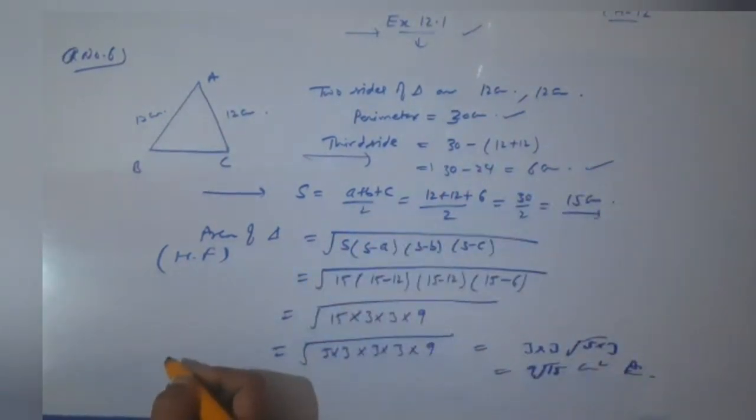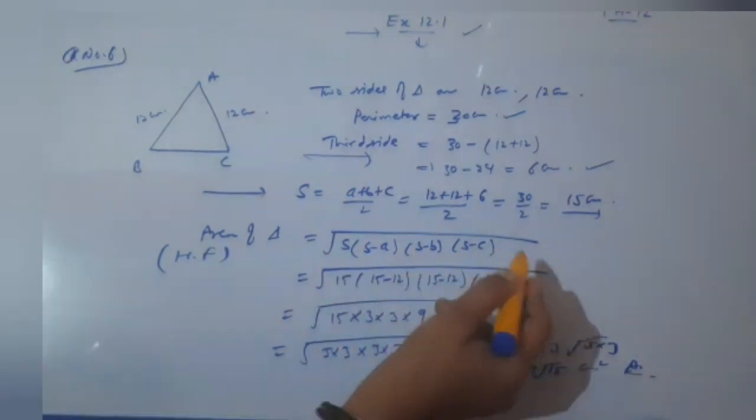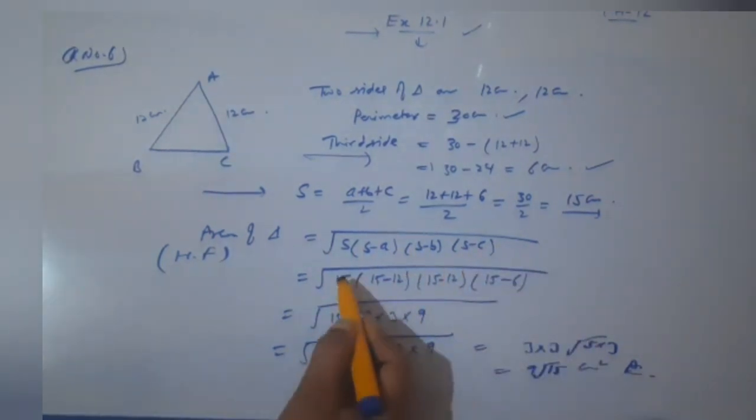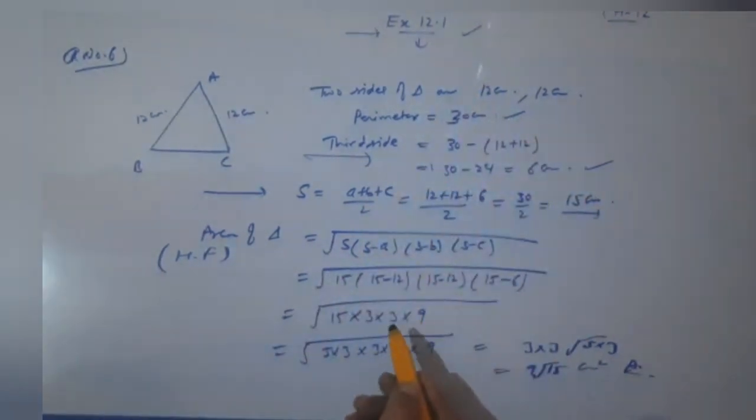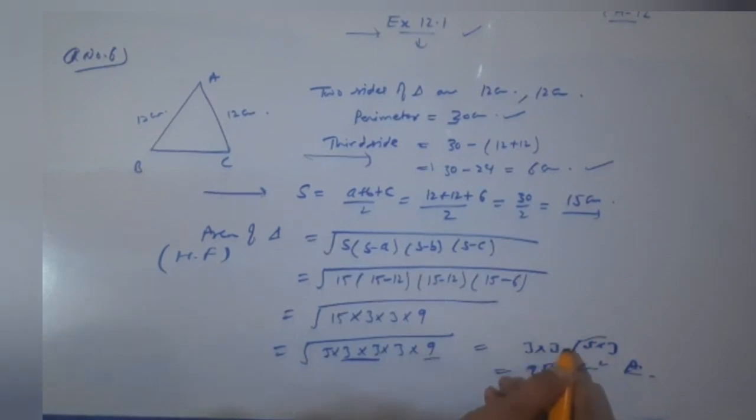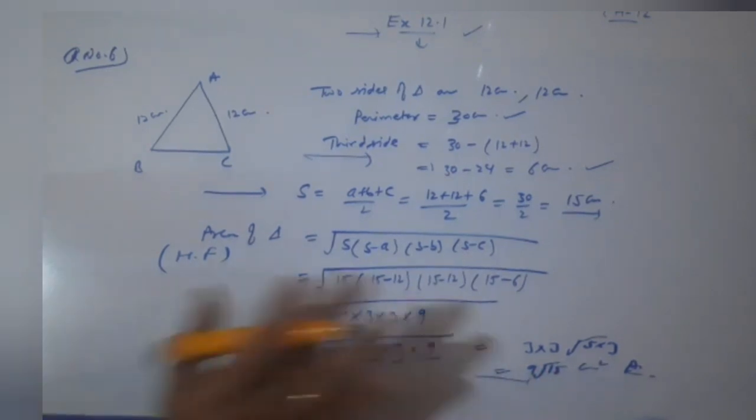Now, what is the area? S into (S - A) into (S - B) into (S - C). 15 × (15 - 12) × (15 - 12) × (15 - 6). We are getting 15 × 3 × 3 × 9. Do the pairing. Two 3s, so take one out. 9 gives one 3 out. And we are getting 3 × 3 is 9 into, inside remains 5. So what is the answer and what is the area of this triangle? That is 9 root 15 cm square. So nothing was difficult in this question.